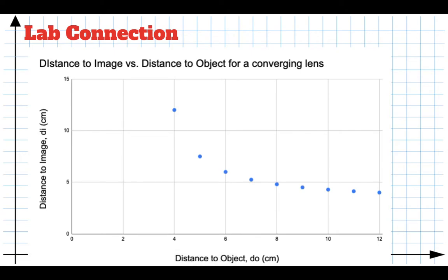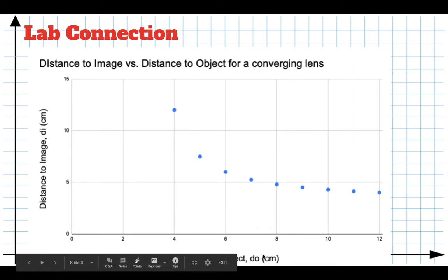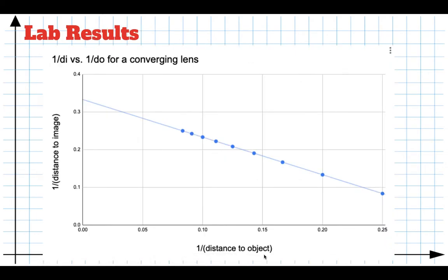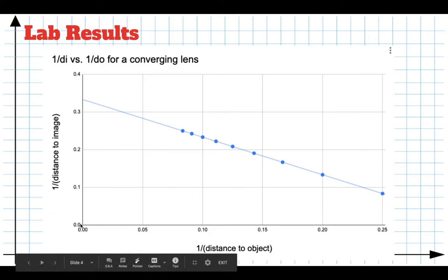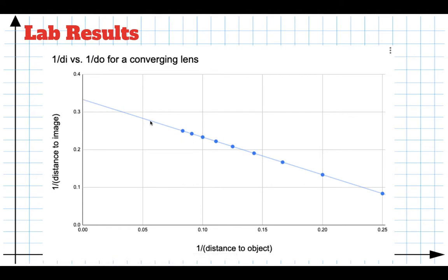That's why we gave you a hint on how to graph it. So what we're going to do is re-graph it. Instead of graphing the distance to the image, we're going to graph 1 over the distance to the image and 1 over the distance to the object. When you did that, you got a graph that looked like this. We wanted you to show 0,0 and scale the y-axis so we could see the intercept. This is a fairly straight line — it does not go through 0,0, but at least it's linear.